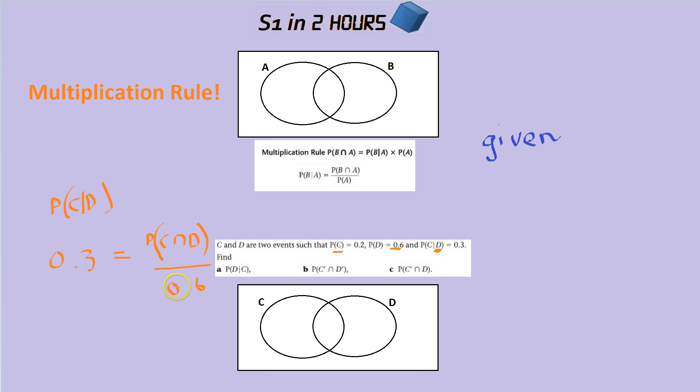Let's work that out. Well, simply times both sides by 0.6. And what you get is 0.18 equals the overlap, the probability of C and D. Just quickly, why we times it is because that line means divide. So divide by 0.6, the way to get rid of divide by 0.6 is times both sides. So that means the overlap, this bit in the middle, is 0.18.